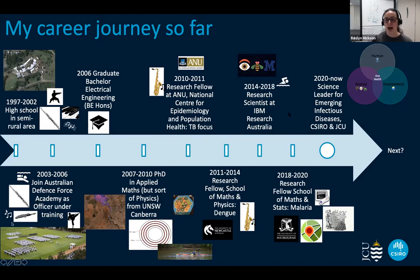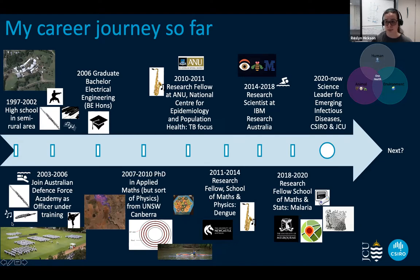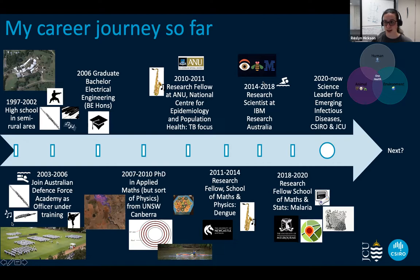So I went to IBM, which is a computer company that at the time was investing very heavily in health and health research. I said, infectious diseases are a really important part of health, so we should have a team looking at infectious diseases. They believed me, and we started doing pandemic preparedness systems from 2014 to 2018. Unfortunately, as companies do, they changed their strategic direction and that stopped — which was two years too soon, I would say.